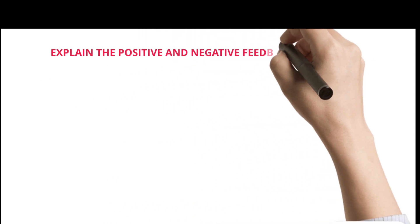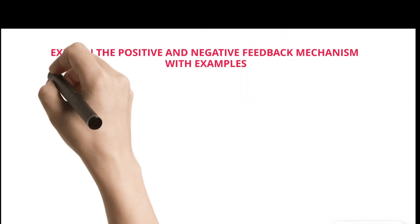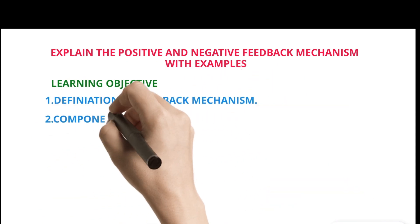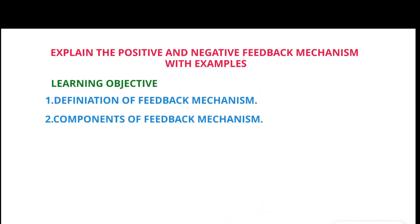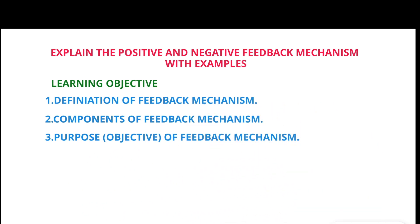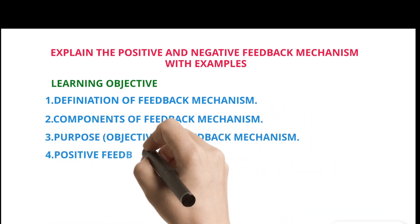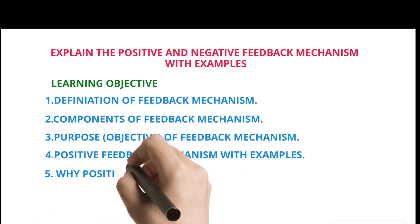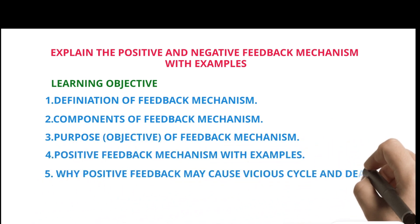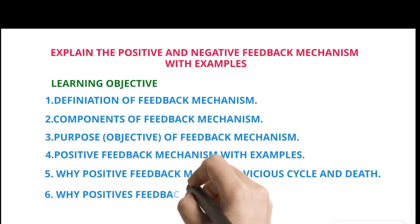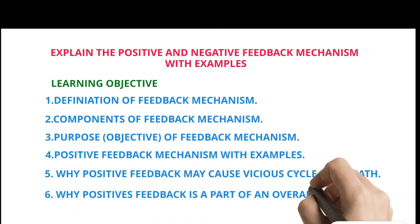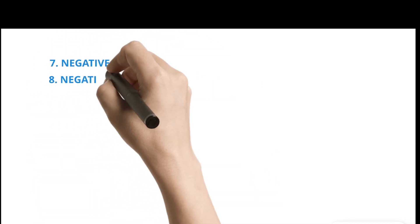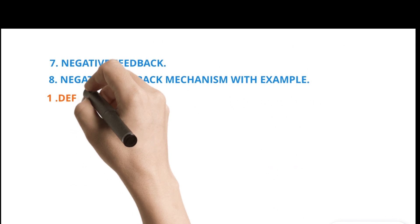Explain the Positive and Negative Feedback Mechanism with Examples. Learning Objectives: 1. Definition of Feedback Mechanism. 2. Components of Feedback Mechanism. 3. Purpose and Objective of Feedback Mechanism. 4. Positive Feedback Mechanism with Examples. 5. Why Positive Feedback May Cause Vicious Cycle and Death. 6. Why Positive Feedback is a Part of an Overall Negative Feedback Process. 7. Negative Feedback. 8. Negative Feedback Mechanism with Example.